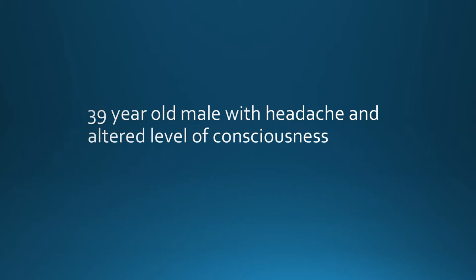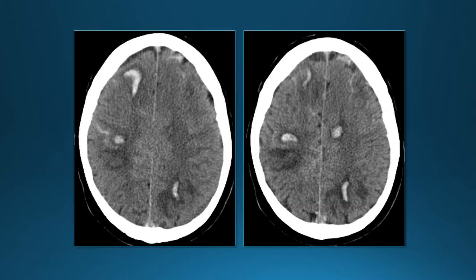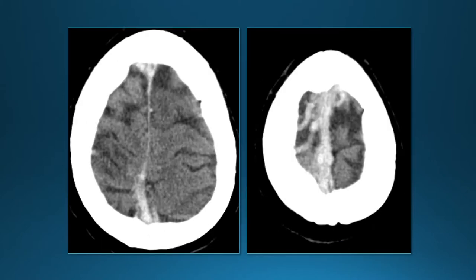Next case: 39- to 40-year-old man with headache and altered level of consciousness. CT shows bilateral parasagittal areas of hypodensity along with areas of hemorrhage. Looking higher up on this non-contrast CT, we can see high density within the sagittal sinus and also in cortical veins.